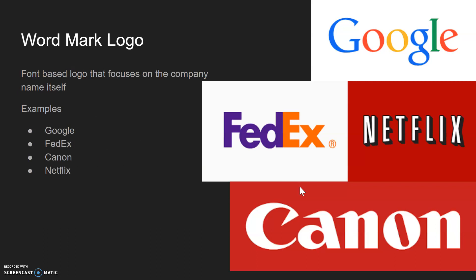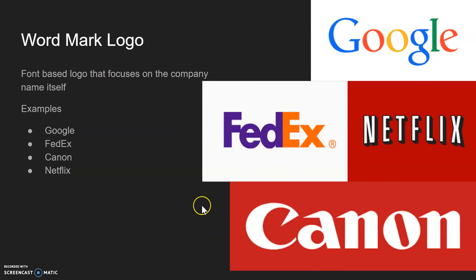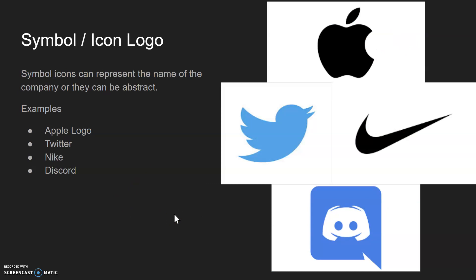First we have the wordmark, and the wordmark is a font-based logo that focuses on the company name itself. Examples would be the Google logo, the FedEx logo, the Canon logo, and the Netflix logo — because obviously all of these are just their names.